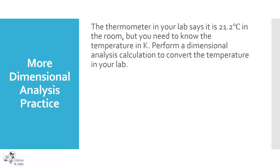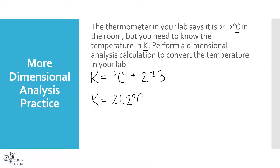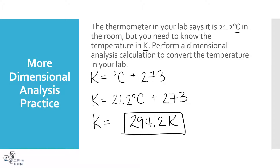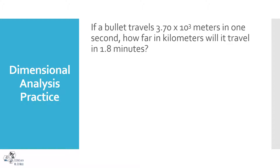This next dimensional analysis problem involves converting between Celsius and Kelvin. If a thermometer says the air temperature is 21.2 degrees Celsius but you need it in Kelvin for your experiment, how do you solve that? As you read in the book: Kelvin equals degrees Celsius plus 273. So 21.2 plus 273 gives 294.2 Kelvin. Always write just K — remember, there's no degree symbol with Kelvin, only with Celsius and Fahrenheit.